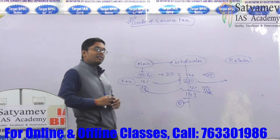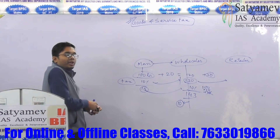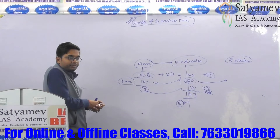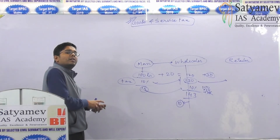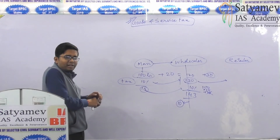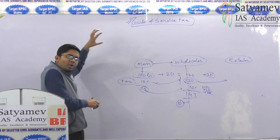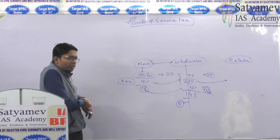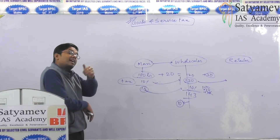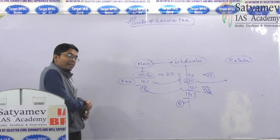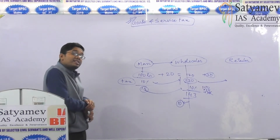So that is the VAT regime. VAT introduced the input credit mechanism, which to a large extent dealt with the problem of the cascading effect. However, both central VAT and state VAT were introduced separately, and different states had different VAT rates. Also, this VAT only considered goods — services were not included.